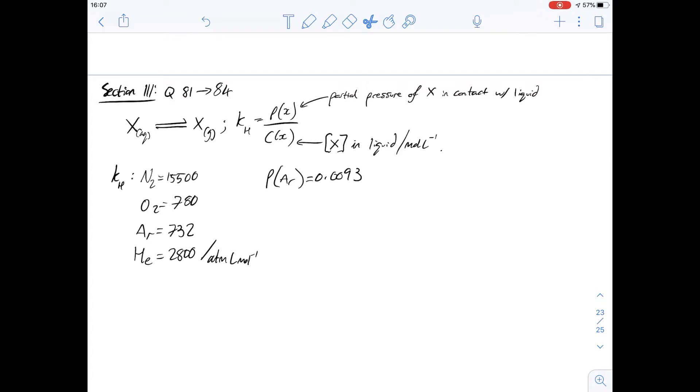There is more nitrogen than oxygen in the extracted air. Why is that? Well, if we look at the KH values for nitrogen and oxygen, we can see that it's much greater for nitrogen than it is for oxygen, and so we know there's a much greater concentration of nitrogen in the air. There's more pressure for nitrogen in the air.